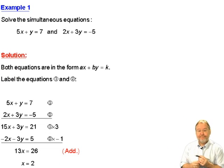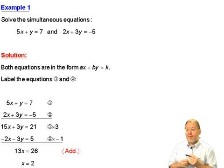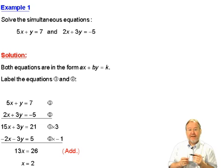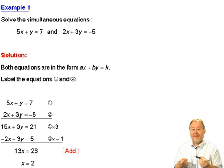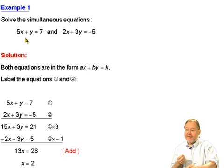Now, example number one. Solve the simultaneous equations: 5x plus y equals 7 and 2x plus 3y equals minus 5. Now, what do we mean by solve the equations? Solve means find the value of x and find the value of y.